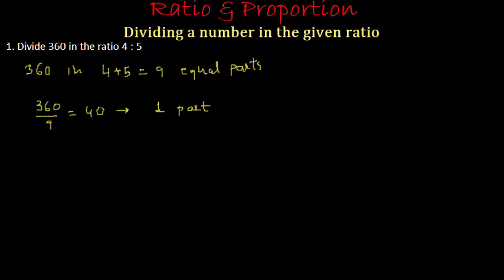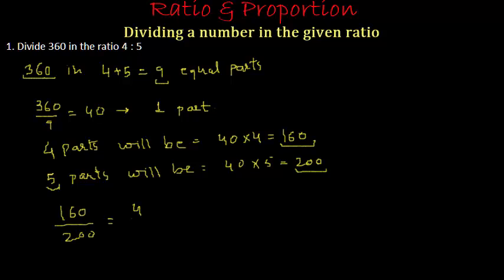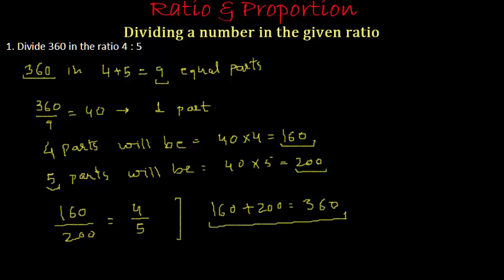If the value of 1 part is 40, then the value of 4 parts will be 40 × 4 = 160, and 5 such parts will be 40 × 5 = 200. So 160 + 200 = 360, and 160 and 200 are in the ratio of 4:5. So we have successfully divided 360 in the ratio of 4:5.